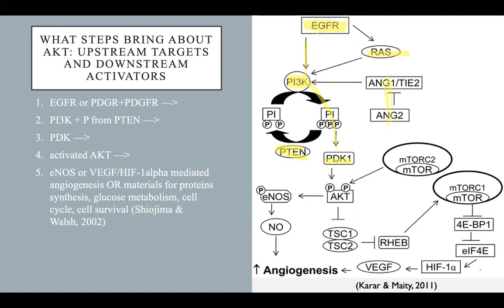A second phosphorylation pathway will actually bring about AKT — either directly from PDK1 or indirectly from another donor. Once we have activated AKT, the downstream activators are fairly direct, involving the nitrous oxide pathway, which can increase angiogenesis. Or more indirectly, VEGF and HIF1-alpha stimulation, or from materials such as protein synthesis, glucose metabolism, cell cycle regulation, or cell survival.